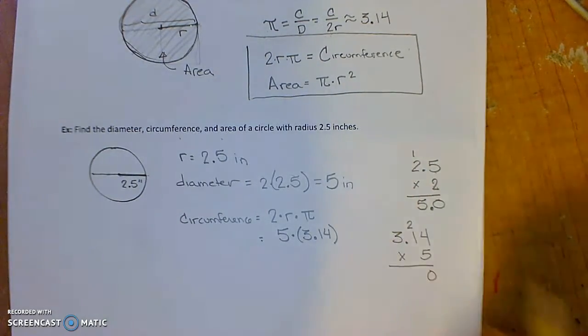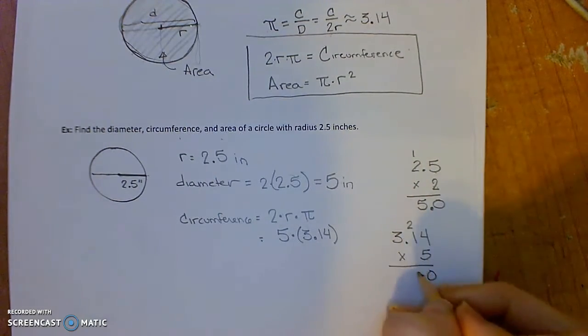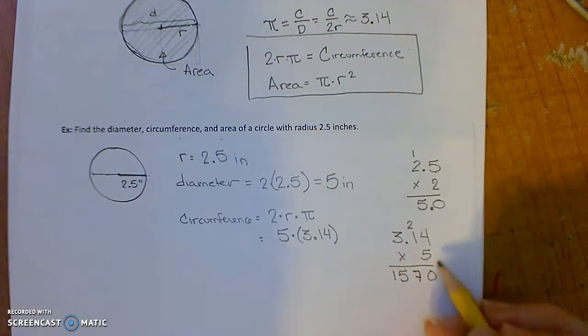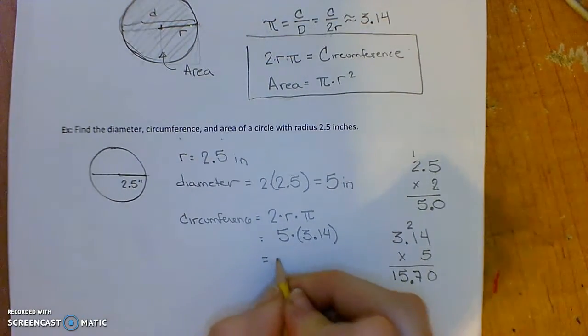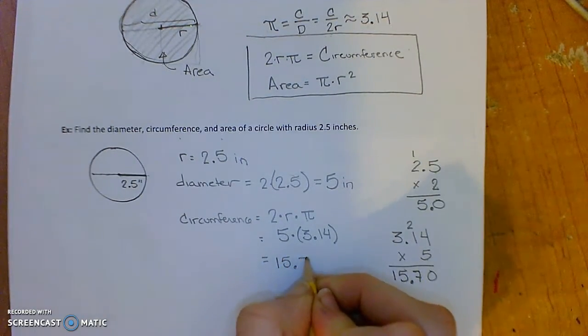5 times 4 is 20, 5 times 1 plus 2 is 7, and then 5 times 3 is 15. 2 places after the decimal here, so 2 places after the decimal there, so we get 15.7.